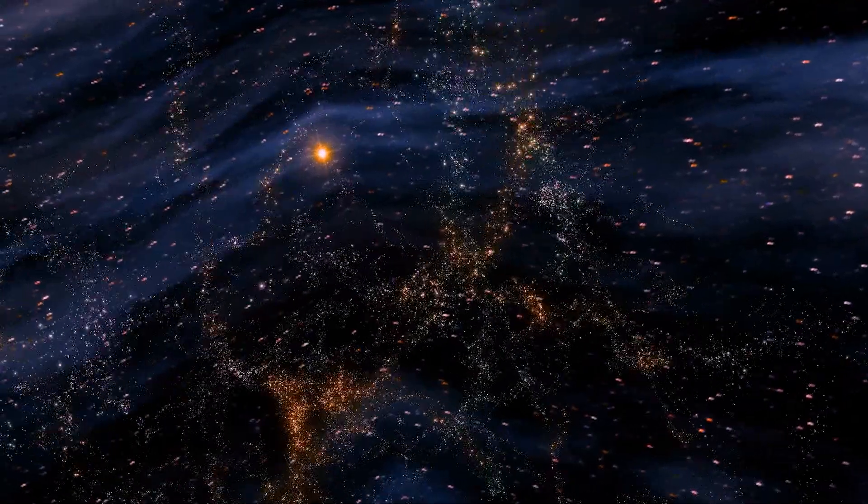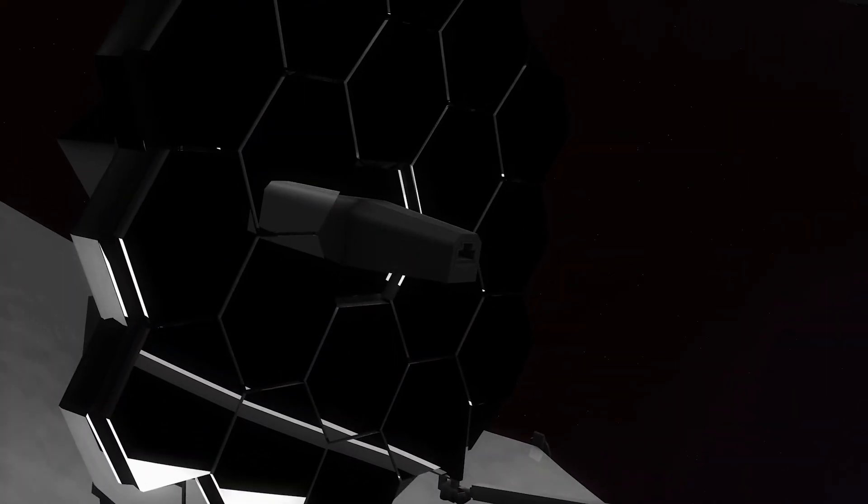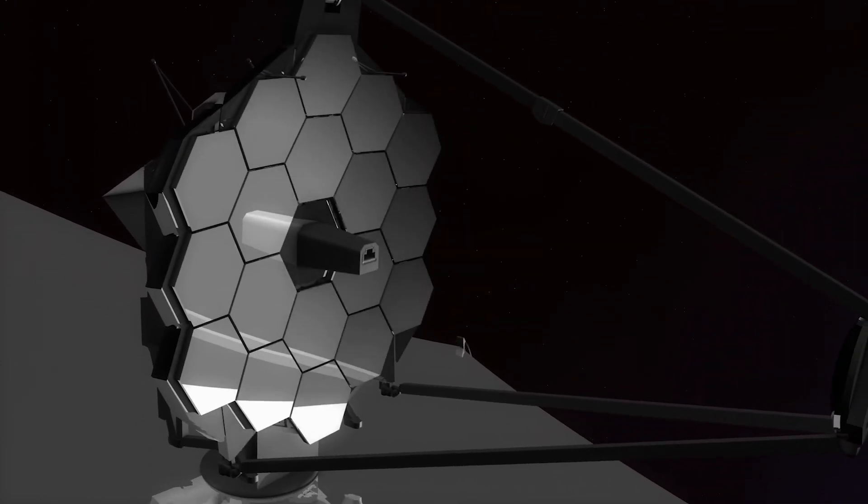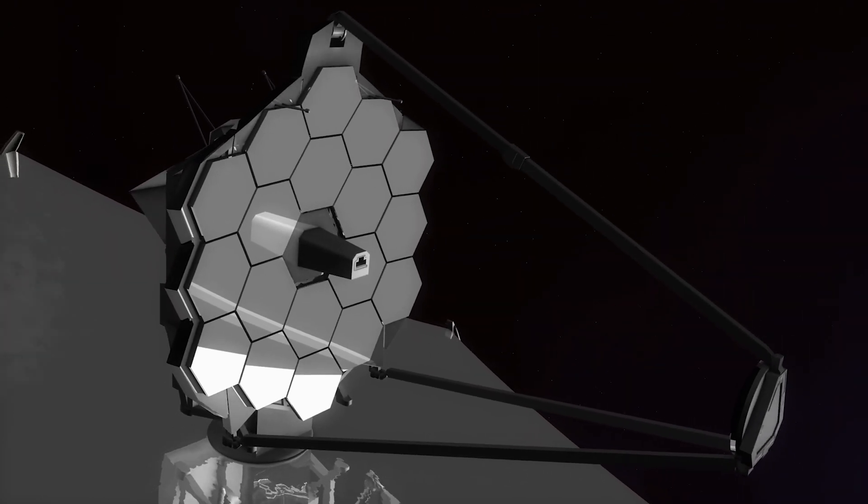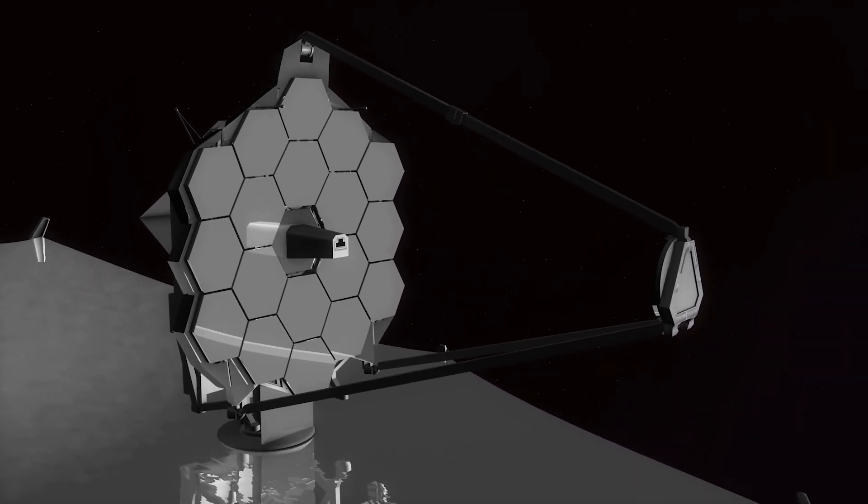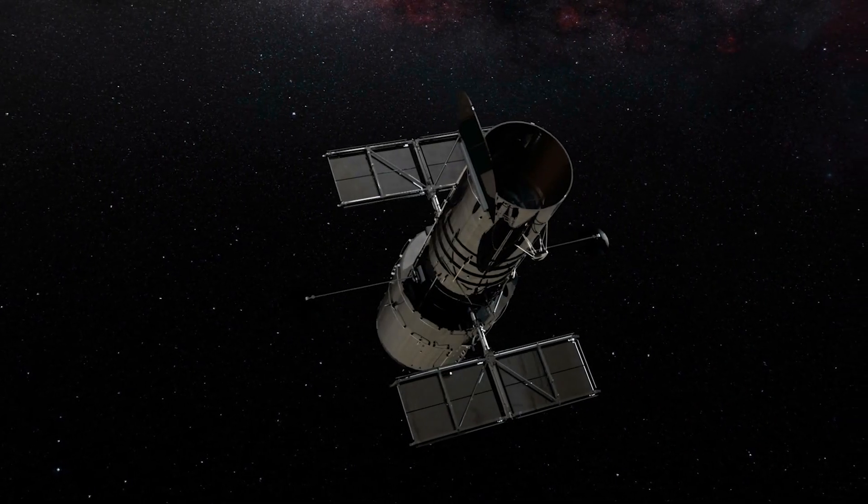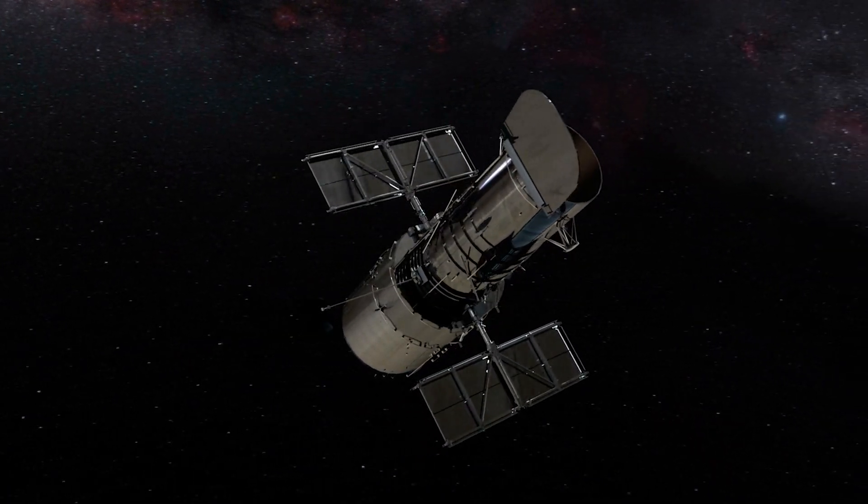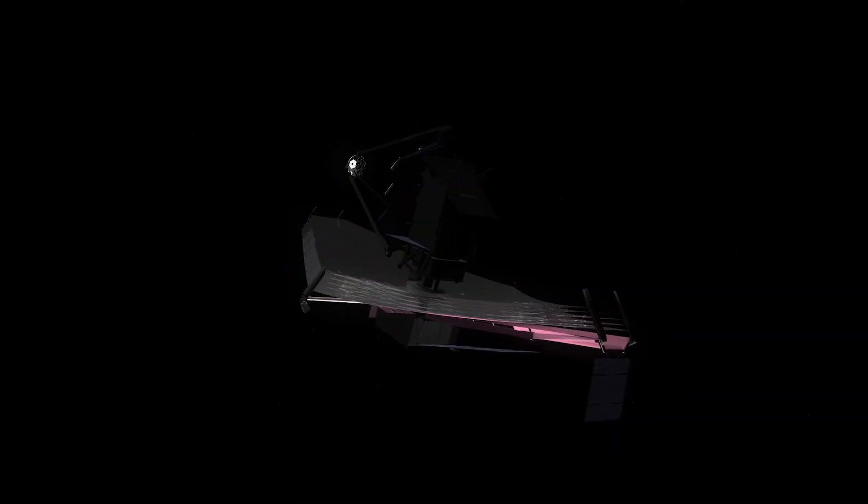The primary mirror of the JWST consists of 18 hexagonal segments made of gold-plated beryllium, which combined to create a six and a half meter or 21 foot diameter mirror. This is considerably larger than the Hubble's eight foot mirror. Unlike the Hubble telescope, which observes in ultraviolet, visible, and near-infrared spectra, the JWST is sensitive in a lower frequency range.